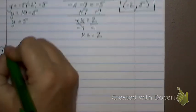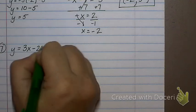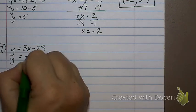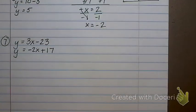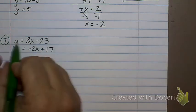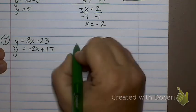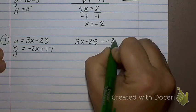Last problem. I want you to try it. It's just like that last one. y equals 3x minus 23. And y equals negative 2x plus 17. Go ahead and try that one.